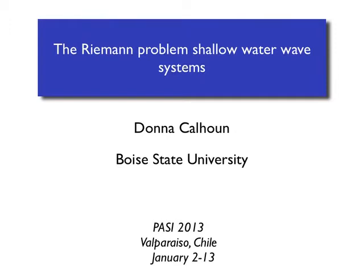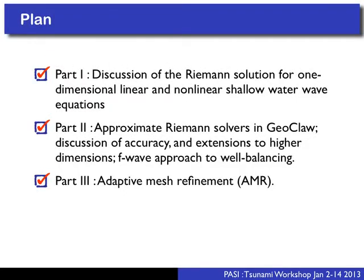Those of you who've been looking at GEOCLAW have been running it and have seen the results of years of effort in solving the shallow water wave equations with complicated bathymetry. What I thought I would do today is focus on one tiny piece of these schemes — the Riemann solution for the one-dimensional linear and nonlinear shallow water wave equations. This is the heart of a finite volume scheme. Tomorrow I'll talk about approximate Riemann solvers and GEOCLAW.